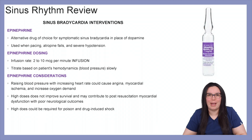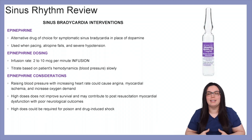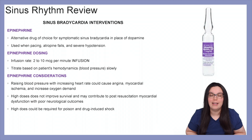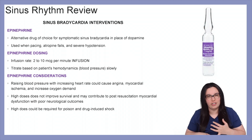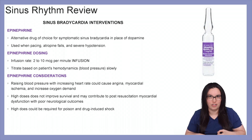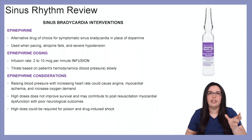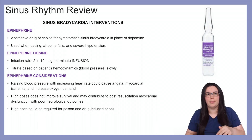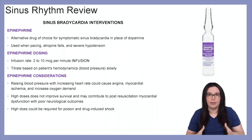Epinephrine is an alternative drug of choice for symptomatic sinus bradycardia in place of dopamine when dopamine is contraindicated. We use this when we're pacing the patient, atropine has failed, and we're starting to have severe hypotension. Dosing is between 2 to 10 micrograms per minute, titrated based on the patient's hemodynamics and blood pressure — titrate that slowly.